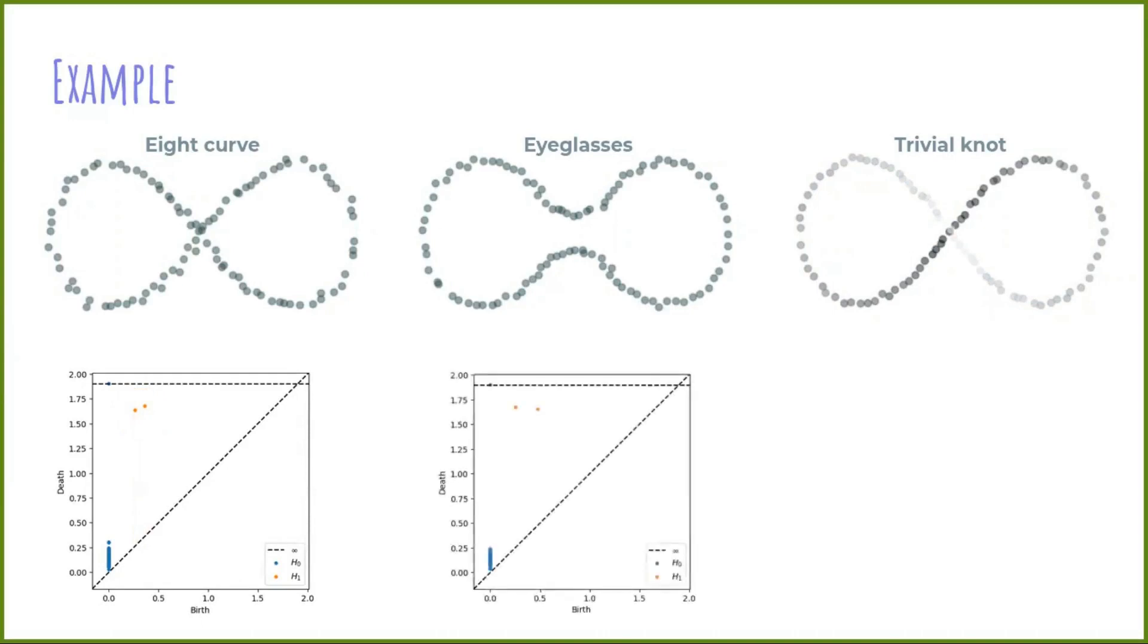In the second case, we obtain again two prominent generators for the first homology group. So at first glance, it's not clear how to distinguish between the topology of these two spaces only looking at its diagrams.